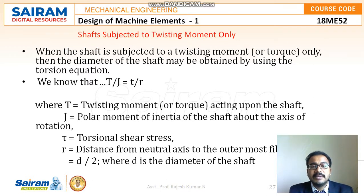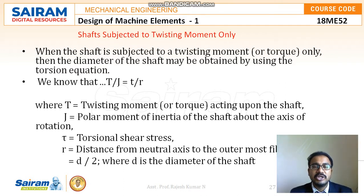When the shaft is subjected to a twisting moment, also called a torque, the diameter of the shaft may be obtained by using the torsion equation. The torsion equation is T/J = τ/R, where capital T is the twisting moment acting upon the shaft and J is the polar moment of inertia of the shaft about the axis of rotation.